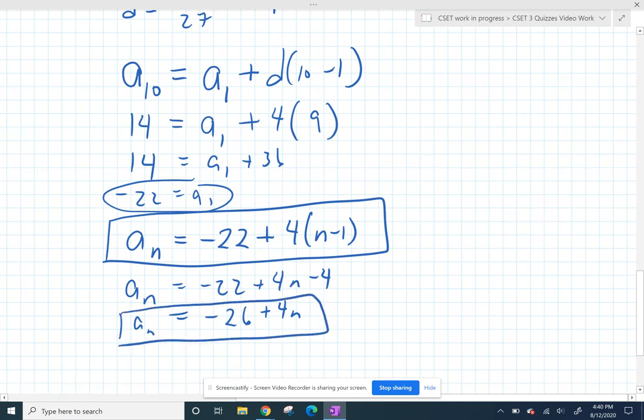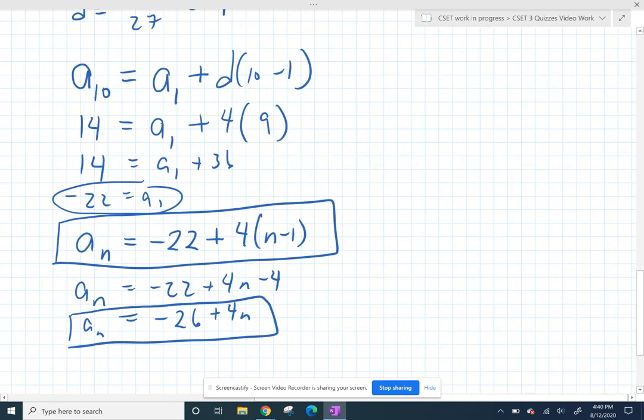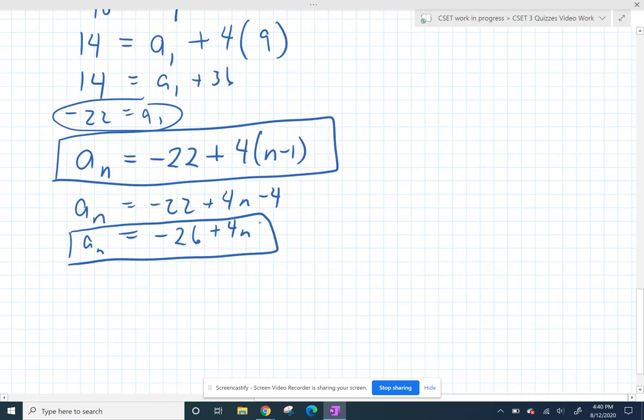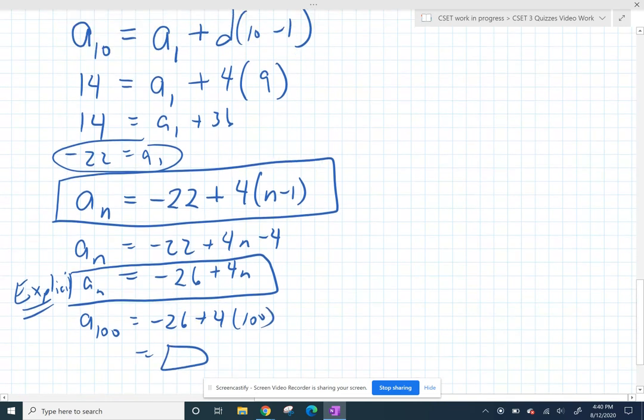In the last question, I forgot to do recursive. So this formula is our explicit formula. We call it explicit because we can get answers explicitly. It's very easy for me to get my 100th term by just plugging in 100, and boom, got it. But if you want a recursive formula, that's okay. Not hard at all.